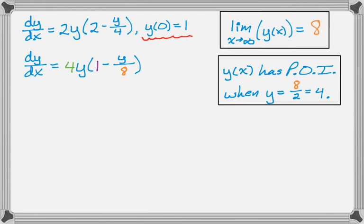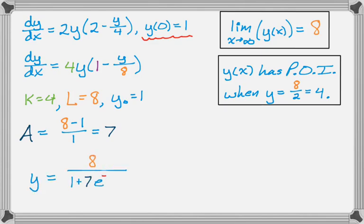Let's go ahead and find the solution to this. So we have to collect those pieces of information. So by observation, I know that k is 4, I know that L is 8, and I'm given y(0), or y sub 0 is 1. What I need to do is calculate A. So A is L minus y0 over y0, or 7. And then I have the solution memorized, so I now know the solution to this differential equation is y equals 8 over 1 plus 7e to the negative 4x.